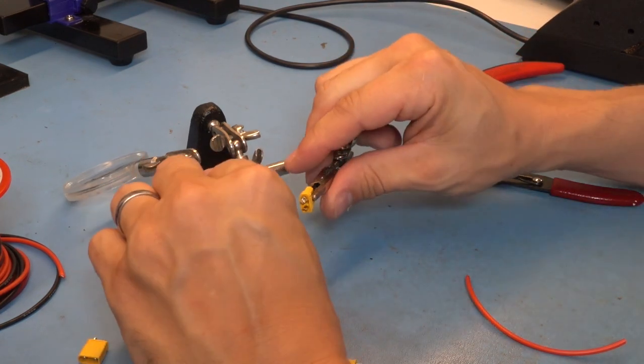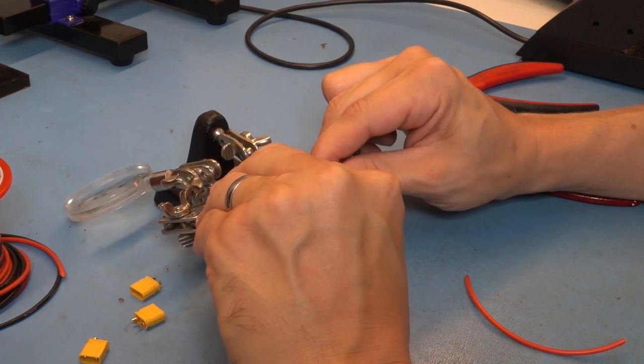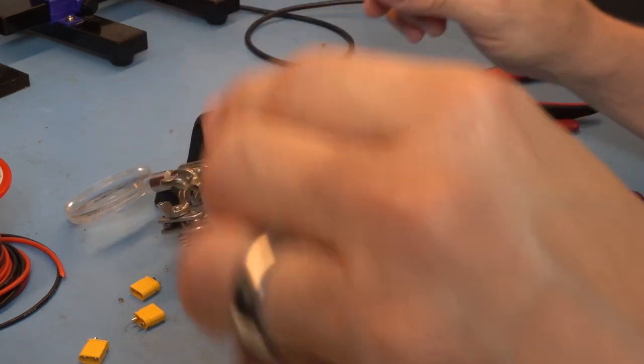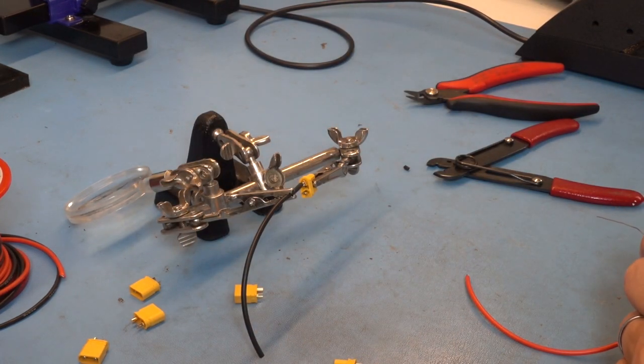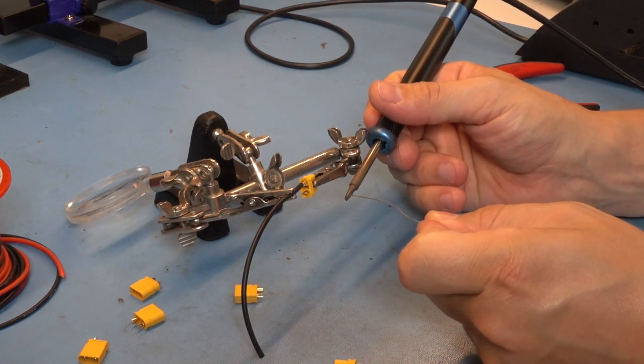Once that's done, you can use the helping hands to position the wire such that it's resting in the solder cup. Then take your iron and wet it with a little bit of solder.